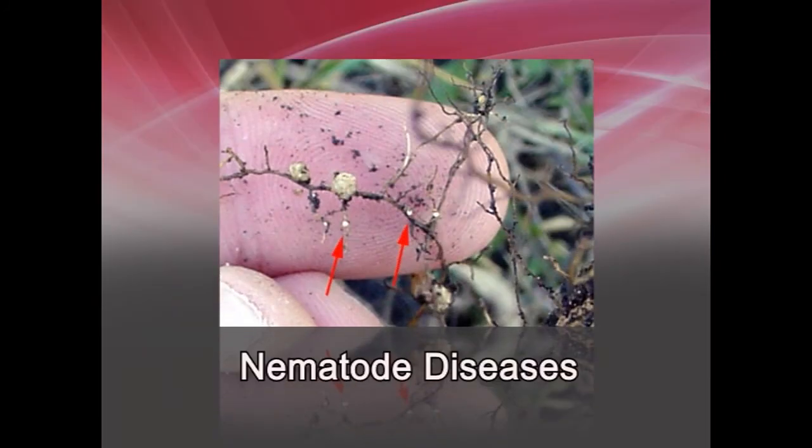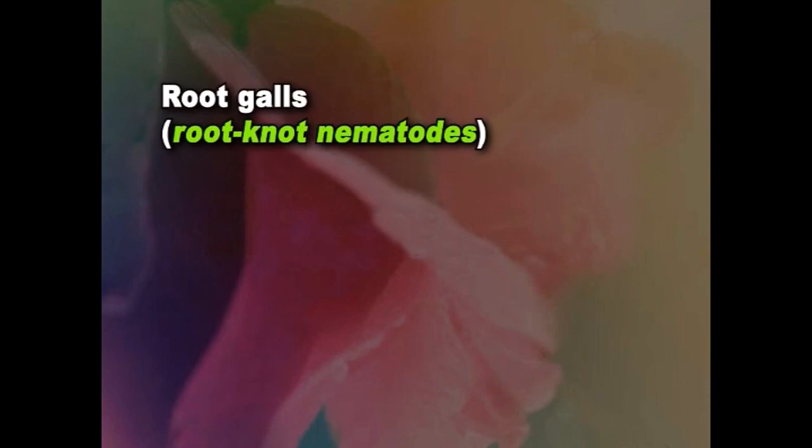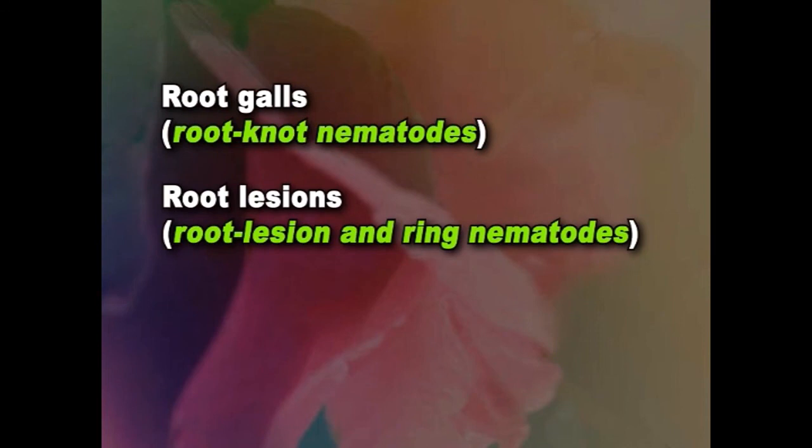Important nematode diseases of rose involve plant parasitic nematodes, which include several genera and can be detrimental in different ways, including acting as vectors spreading plant viruses or as endoparasites. Many rose growers observe plants that have failed to respond to good cultural practices and exhibit yellowing, dwarfing, and reduced vitality. Below-ground symptoms include root galls caused by root-knot nematodes and root lesions caused by root lesion and ring nematodes.